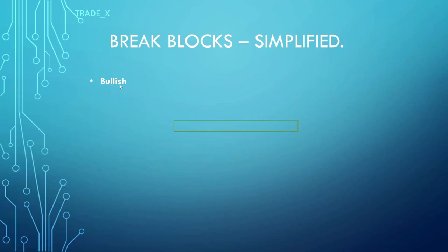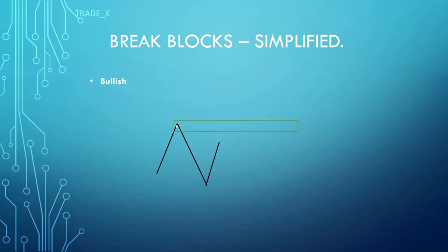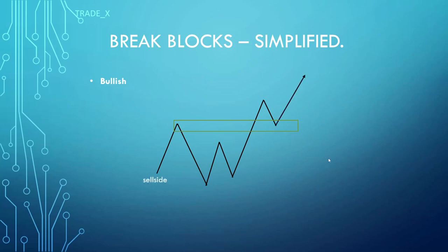Now for the bullish breakdown in detail: we have price moving higher with sell side liquidity below. We frame where our bullish breaker resides, but we do nothing at this point — we're waiting for the second swing low to purge the previous sell side, which it does. Price moves higher to retest that swing high before moving lower. At this instance we're looking for mitigation blocks, breaker blocks, and order blocks for price to move higher, but we're specifically looking for the breaker block.